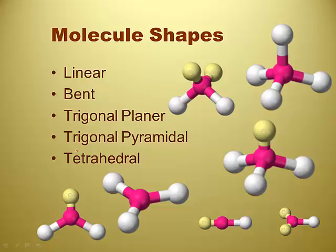So there are five shapes that you have to know. Linear, bent, trigonal planar, trigonal pyramidal or pyramid, and tetrahedral. That's all five of them that we have to know.